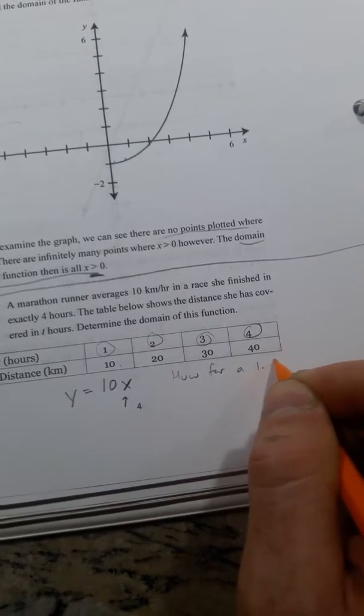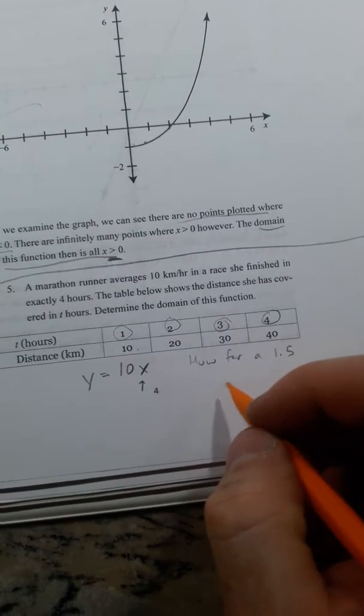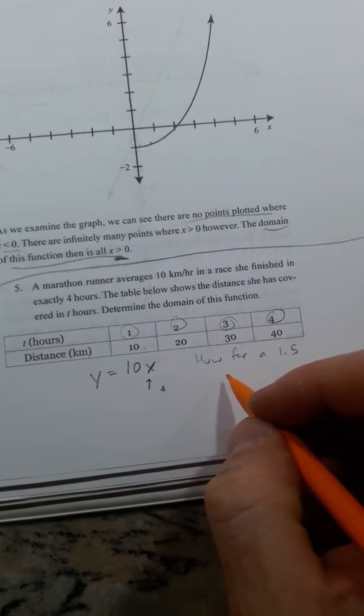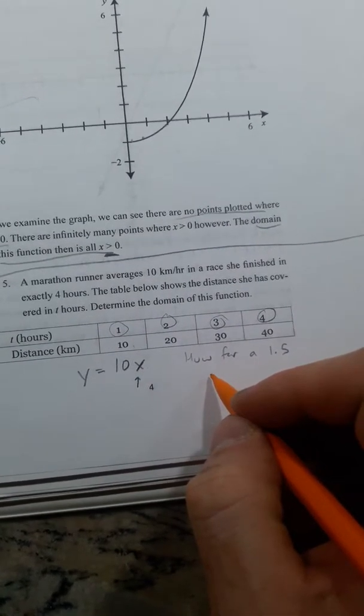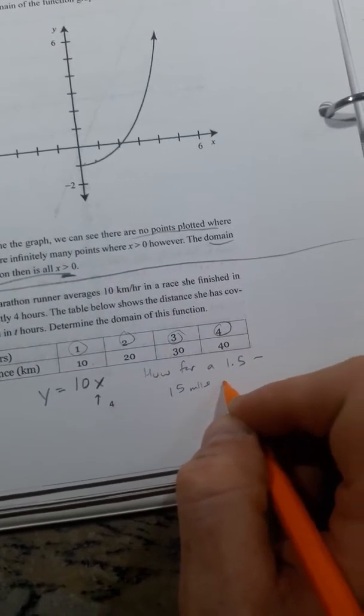at 1.5 hours, and then I could plug 1.5 in. That's totally doable to figure out how far I've gone. So it would be 1.5 times 10, which would be 15 miles. This is my domain. This is my range.